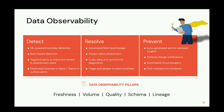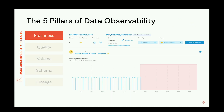Now I'll talk about the five pillars of data observability: freshness, volume, quality, schema, and lineage. Freshness refers to how up-to-date the data is. Has a table that updates on an hourly cadence suddenly not updated in five hours? This could mean reports are relying on stale data, which could have serious repercussions.